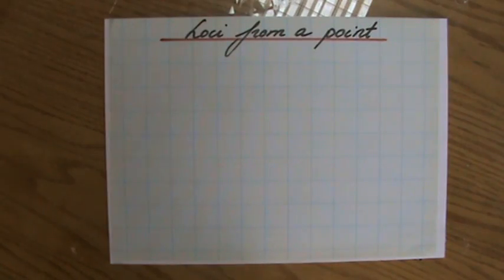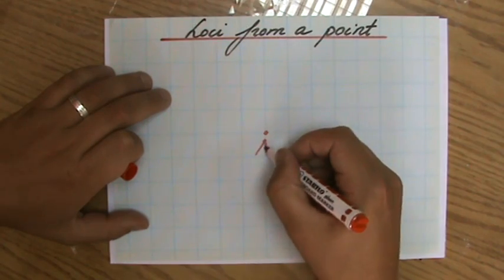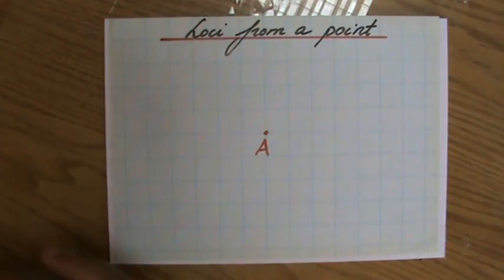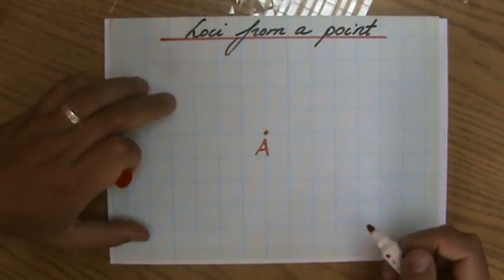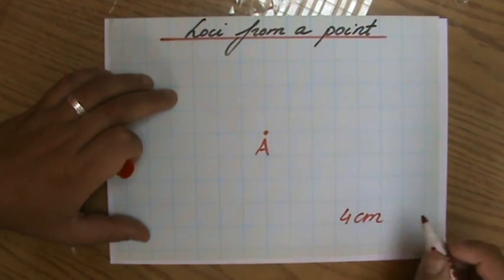Make sure you've seen that video or check my site explainingmaths.com where all my resources are nicely organized. Now let's say I have a point, point A. What are the loci? What shall we do? Four centimeters away from point A.